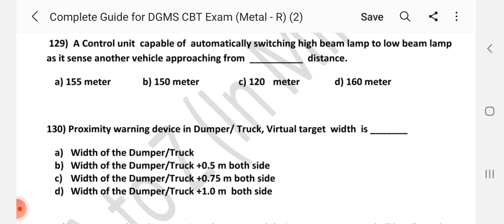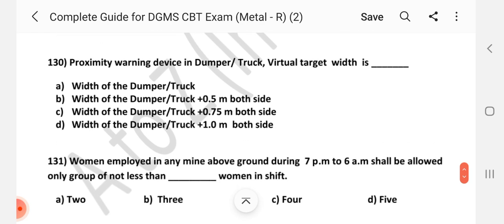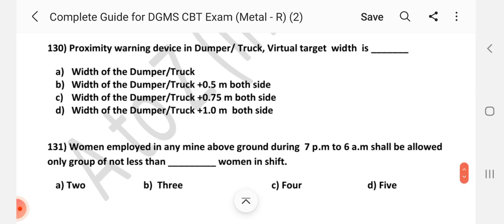Question number 129. A control unit capable of automatically switching high beam lamp to low beam lamp as it sends another vehicle approaching from dash distance. Answer is B, 150 meter. Question number 130. Proximity warning device in dumper truck virtually target width is dash. Answer is B, Width of the damper or truck plus 0.5 meter at both sides.